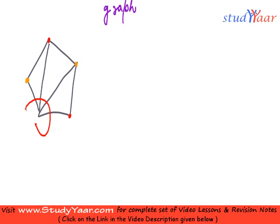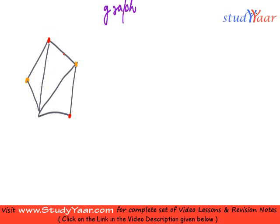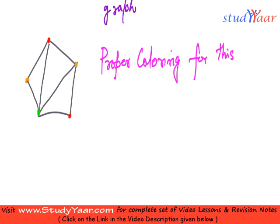Now I am left with only this last vertex. It is adjacent to a red colored vertex and also adjacent to an orange colored vertex, so I cannot give either red or orange. So let us give green to this vertex. As you can see, I have colored all the vertices such that no two adjacent vertices have the same color. This is your proper coloring for this graph.